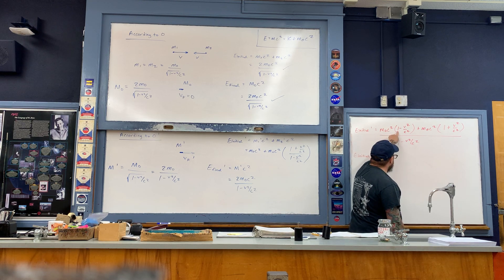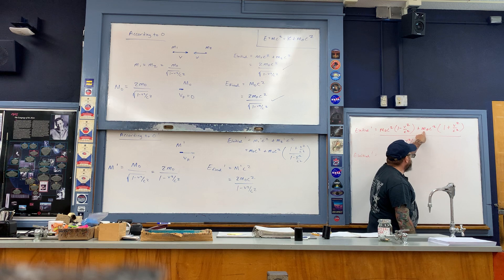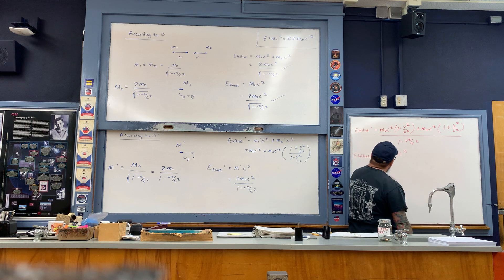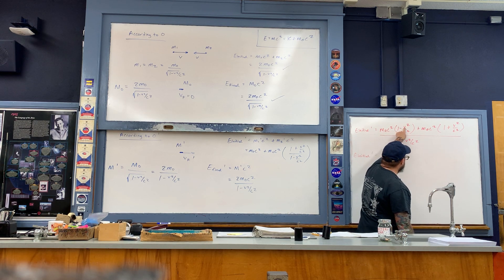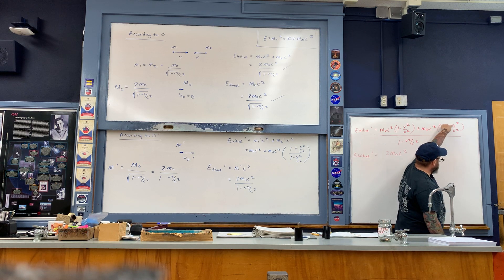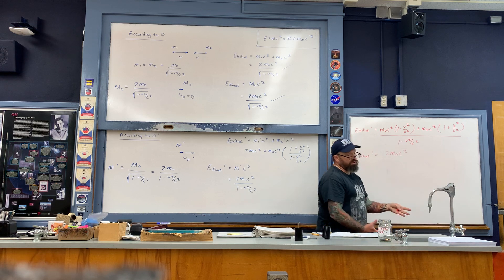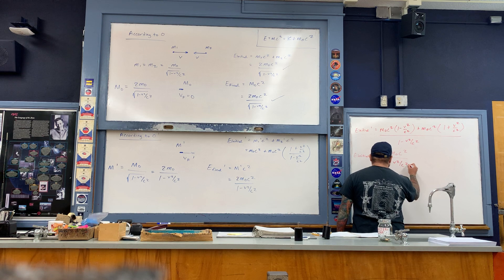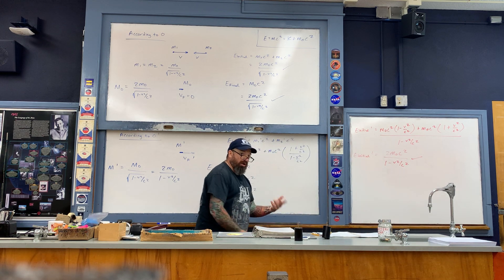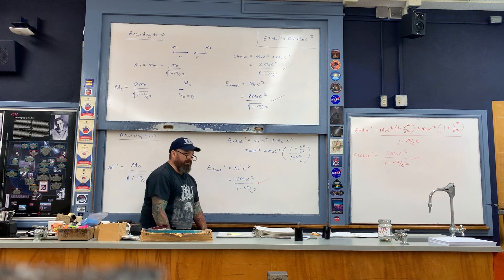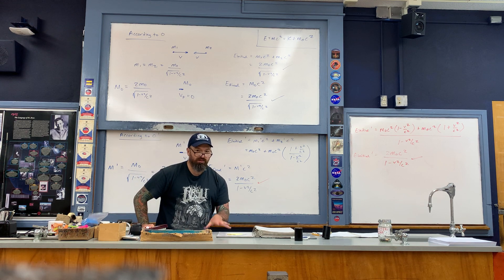Simplifying the numerator: m_naught·c² times one plus m_naught·c² times one gives two terms. The negative m_naught·v²·c² and the positive m_naught·v²·c² terms cancel — the c² squares cancel — so those terms drop out completely, leaving just the denominator. Right there is E_initial prime; right here is E_final prime. Notice they are the same — energy is conserved.